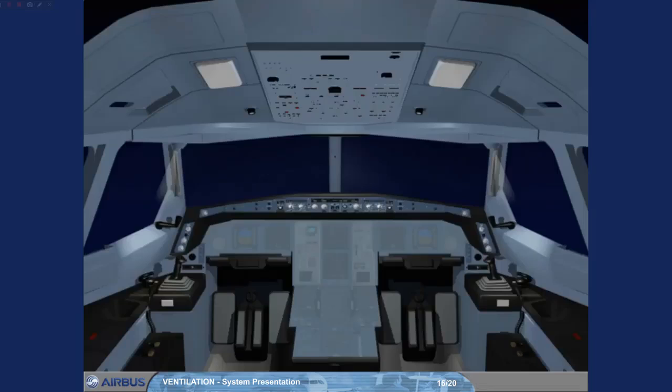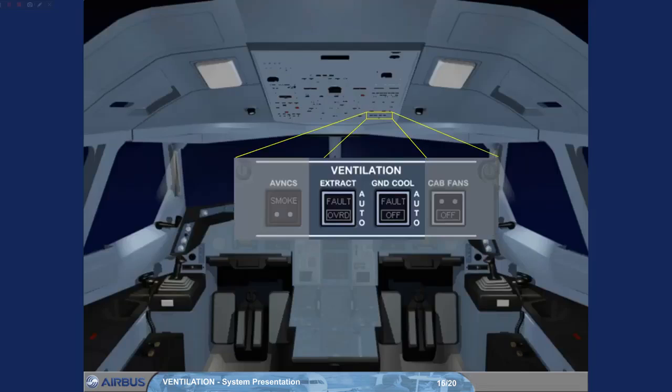A ventilation panel on the overhead panel contains two push button switches associated with the ventilation system. During the pre-flight cockpit scan, you should confirm that these switches are in the lights-out position. The avionics ventilation system will then operate automatically and require no pilot input.